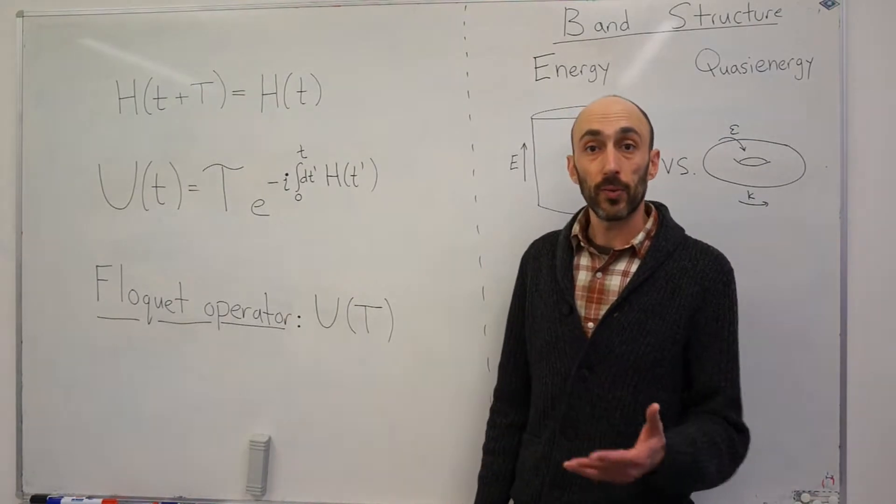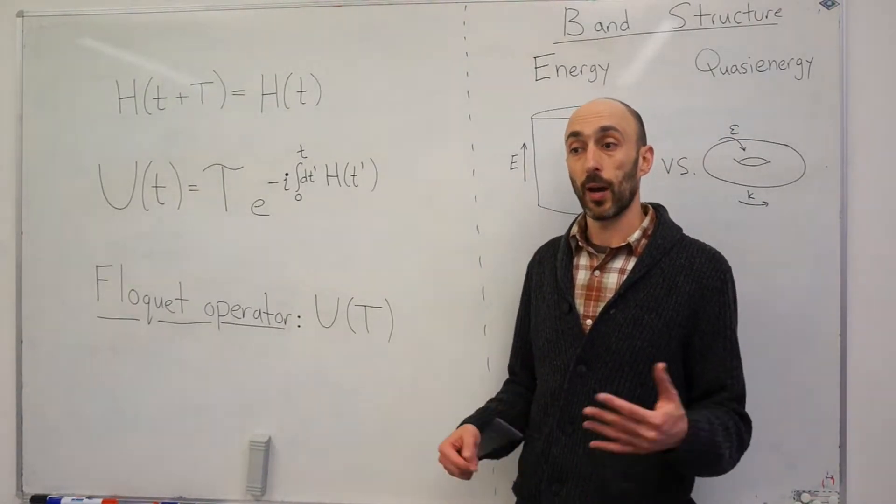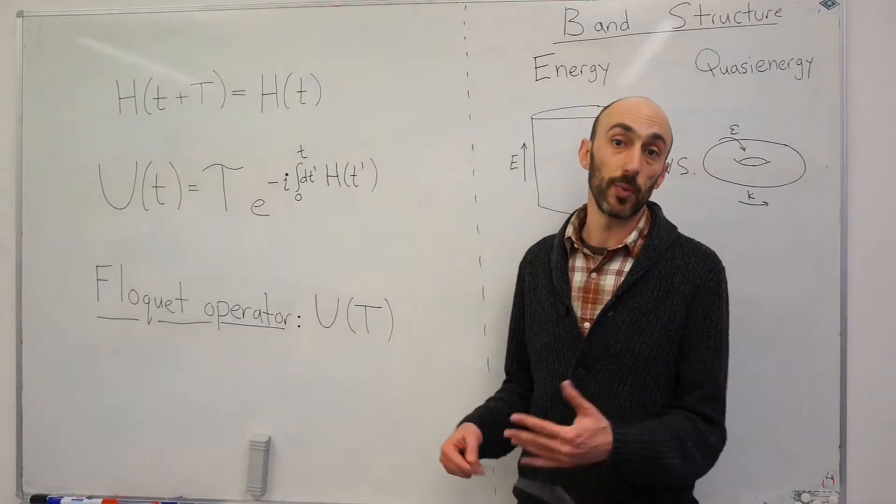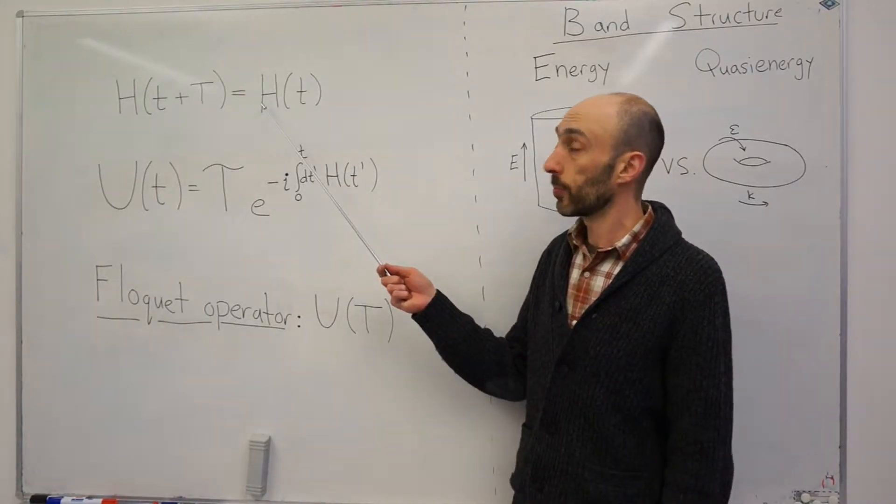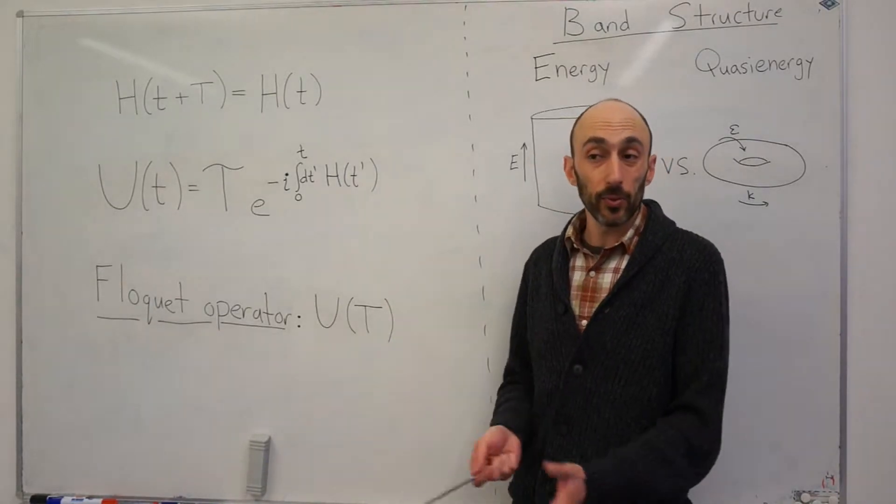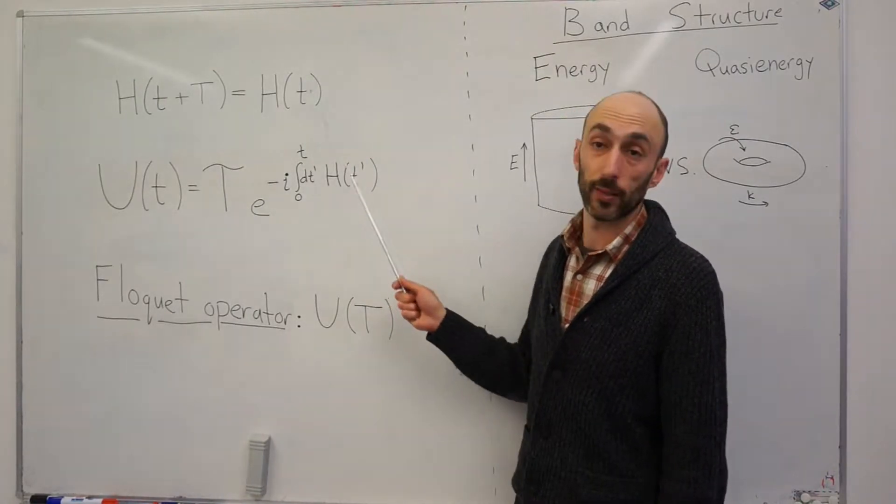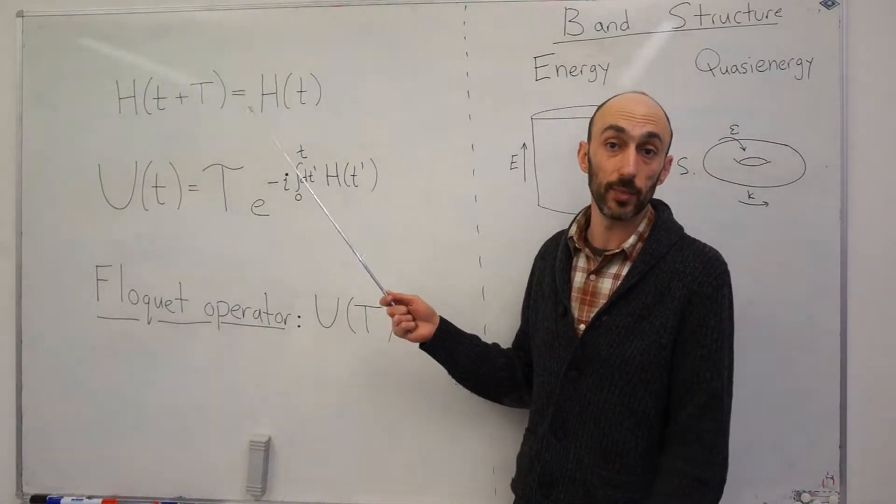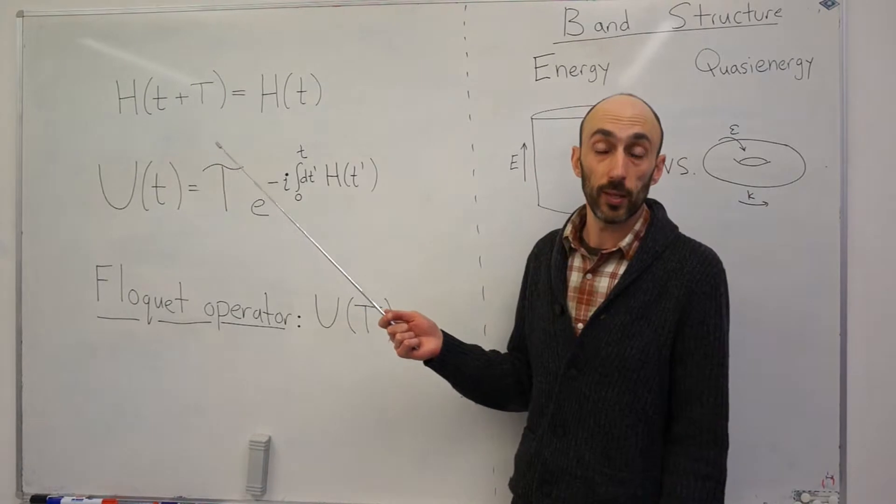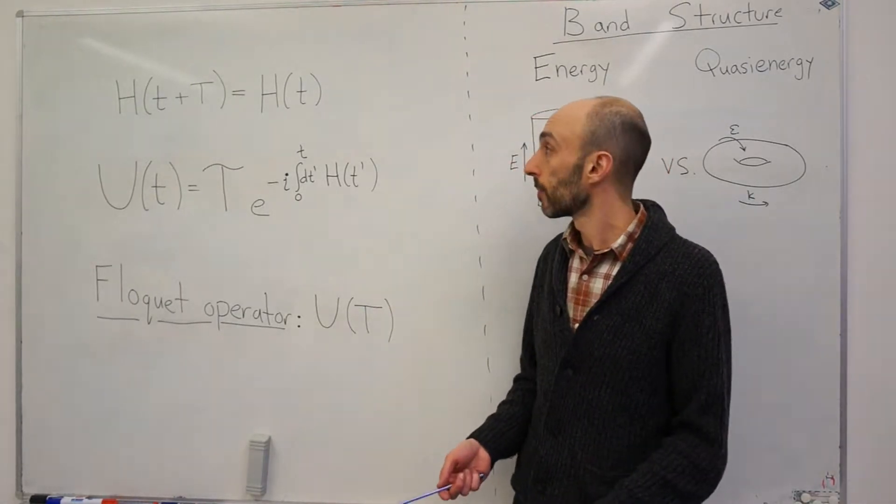Now, in our previous studies of topological insulators, the focus was always on the eigenstates of the Hamiltonian, in particular the many-body ground state. When we have a system with a time-dependent Hamiltonian, there isn't a ground state anymore. In fact, there aren't really even any useful eigenstates to speak of. I could imagine diagonalizing this Hamiltonian at every instant of time t, but generally speaking, those eigenstates don't tell me very much about the evolution of the system.